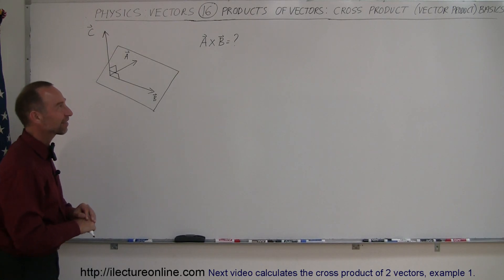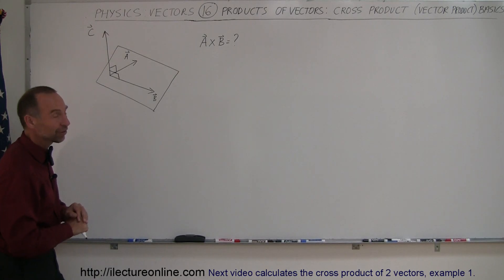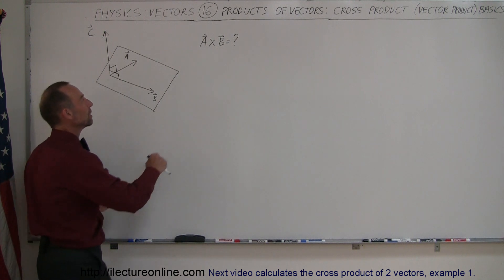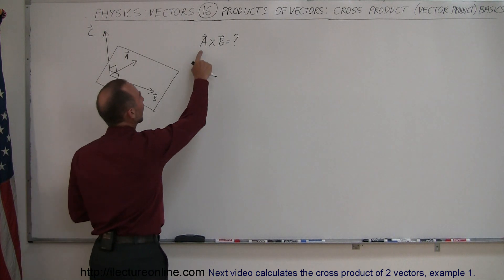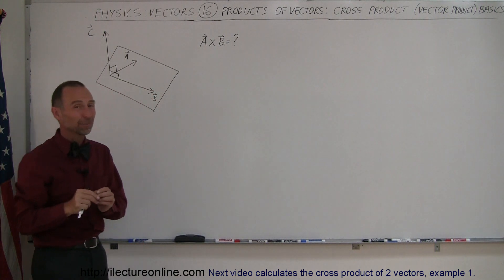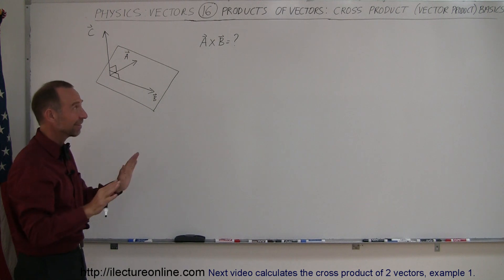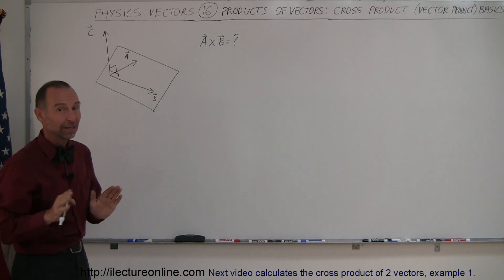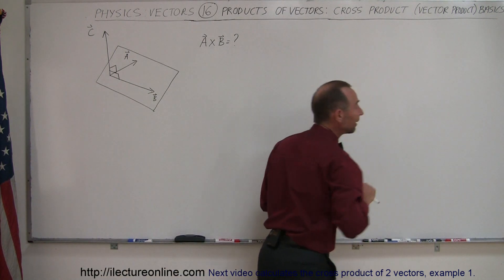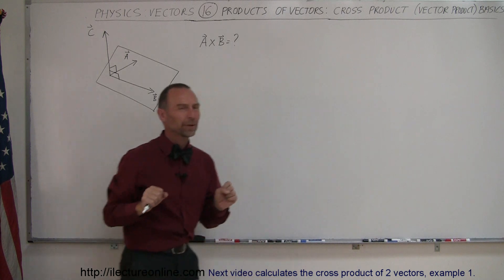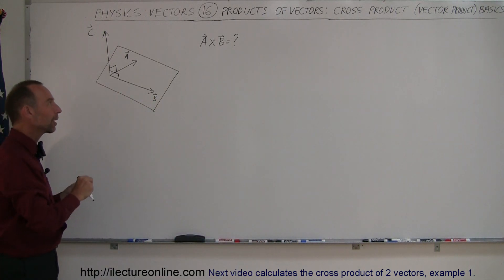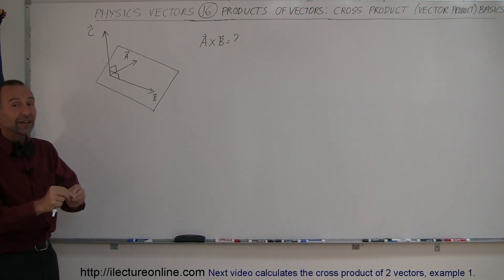Welcome to ElectronLine. Our next topic on products of vectors is the cross product. When we multiply A times B using a cross symbol, that means the cross product, which is not the same as a dot product. We also call this the vector product, because the result of the cross product is another vector.